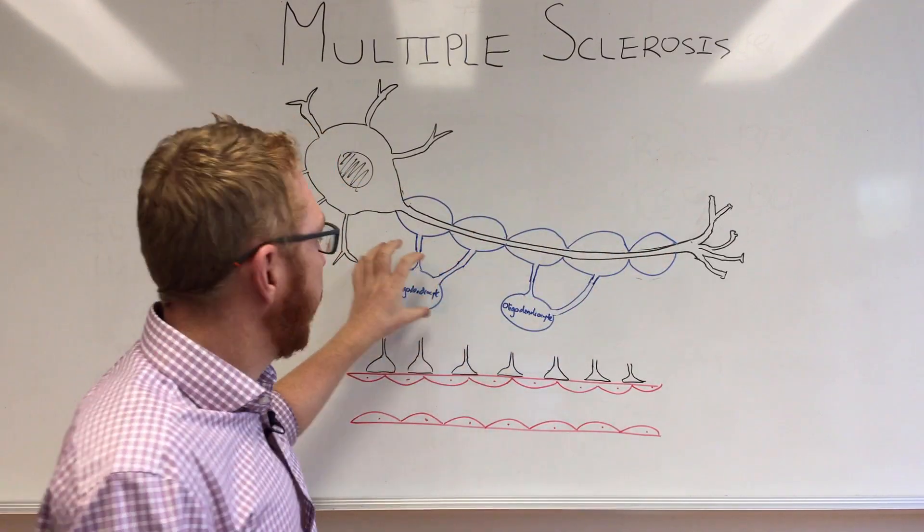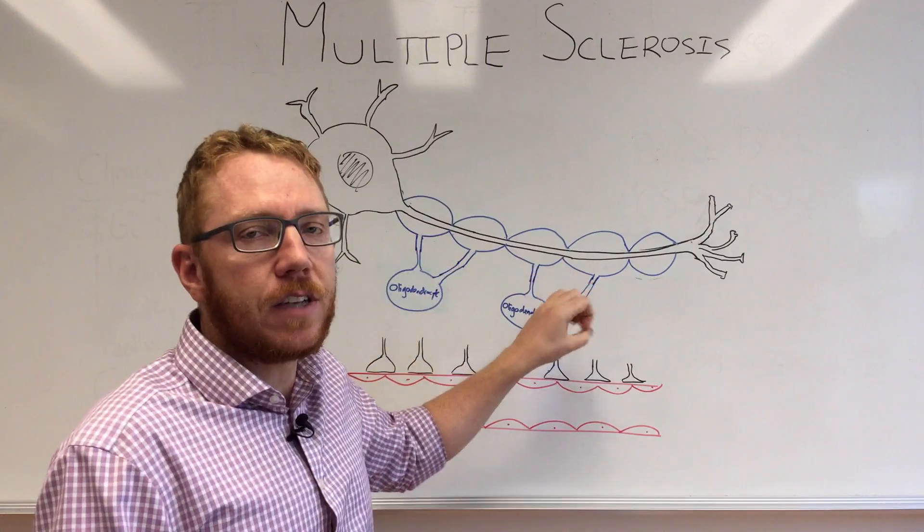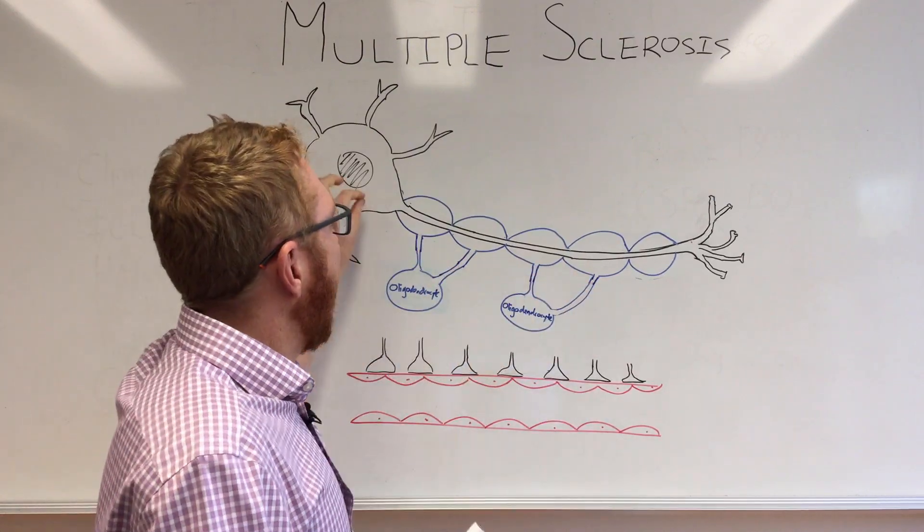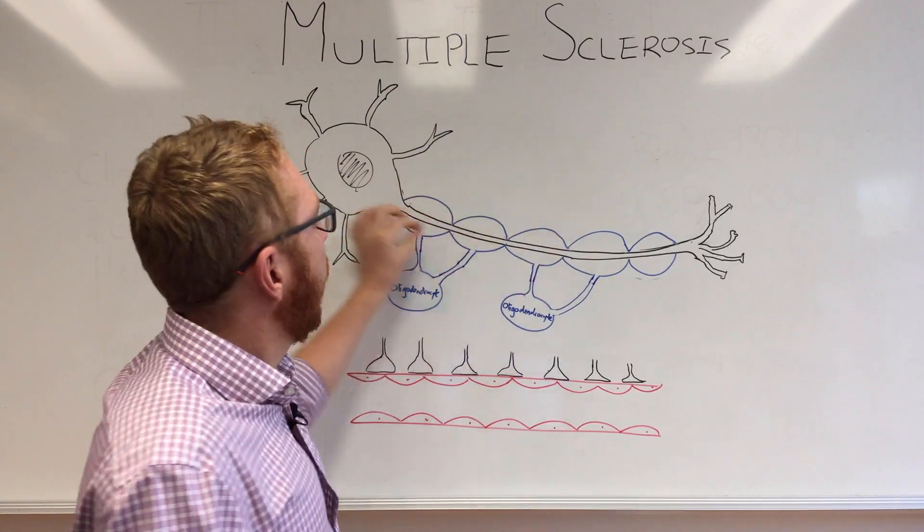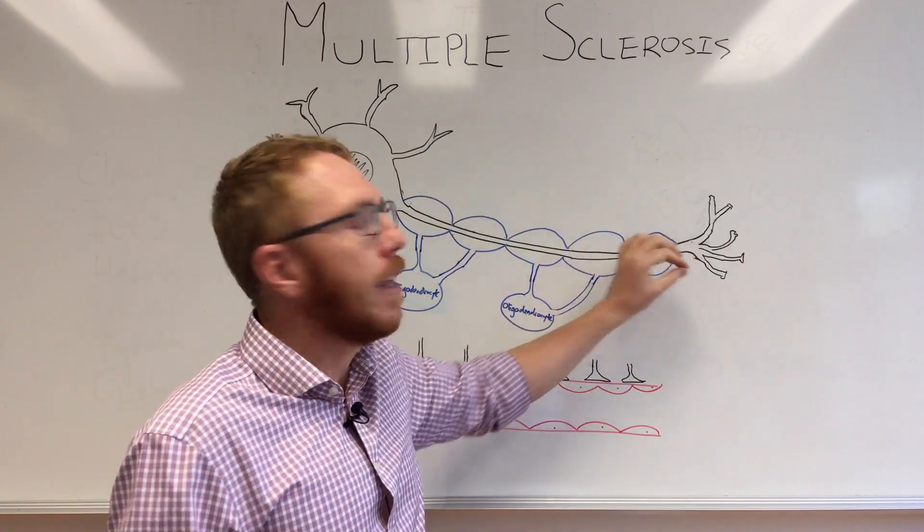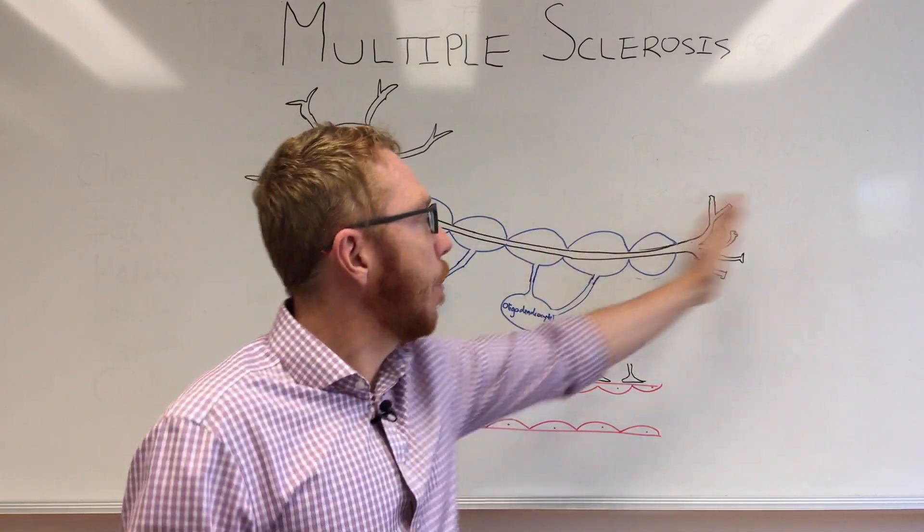This myelin, which you can see in blue, in the central nervous system this myelination is done by oligodendrocytes. The action potential is sped up by this myelin so it can almost jump between the myelin gaps and that allows the propagation speed to be much quicker.